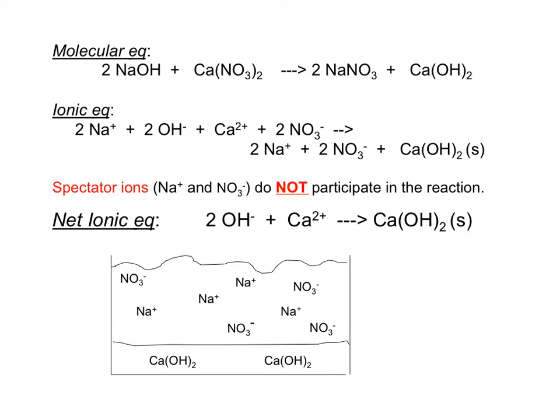Going back to that equation to make lime for fertilizer, the compounds that are soluble are identified. We want to break up those soluble compounds into ions. Note how we carry the coefficients in sodium hydroxide and sodium nitrate, and how the subscript in calcium nitrate becomes a coefficient.